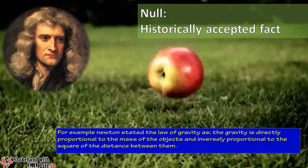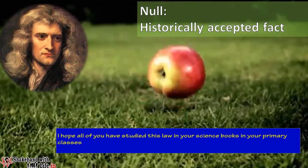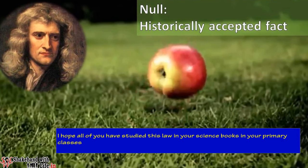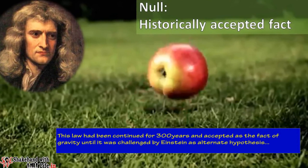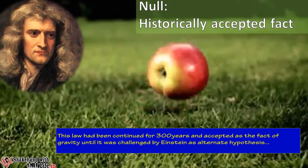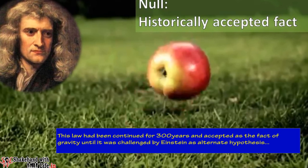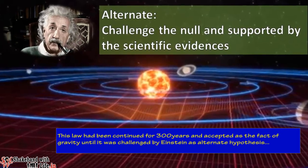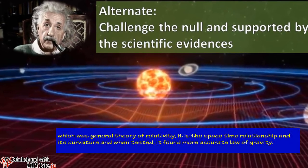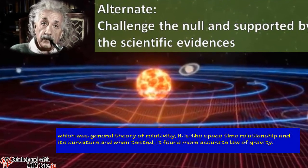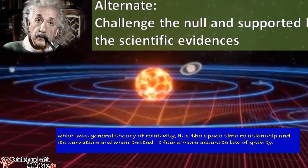Newton's law of gravity was accepted as fact for 300 years, until it was challenged by Albert Einstein as an alternate hypothesis — the General Theory of Relativity, describing a space-time relationship and its curvature. When tested, Einstein's theory was found to be a more accurate law of gravity.